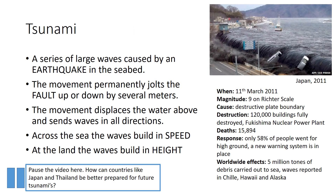Tsunamis are caused by earthquakes — a series of large waves caused by an earthquake in the seabed. Imagine a big earthquake on the ocean floor; it sets off waves that travel in all directions, and these waves are called a tsunami. Out in the ocean the waves may only be a metre high, but they can travel very fast at over 700 kilometres an hour. As they reach shallower water near a coast, they slow down but get taller, and when they hit the land they can be up to 30 metres high. Tsunamis can be deadly and can kill people thousands of miles from the epicentre of the earthquake.